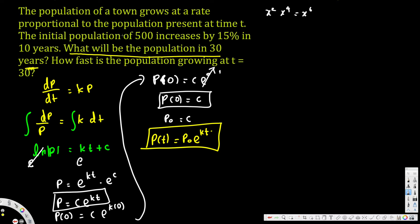Looking at the information provided: the initial population is 500, so P₀ = 500. The population increases by 15% in 10 years, so P(10) reflects that. We don't have the k value yet, but if we find k we can build a general equation, since the question asks about 30 years but gives information about 10 years.